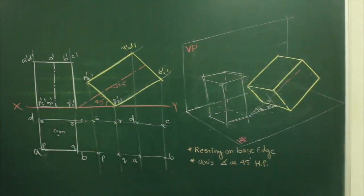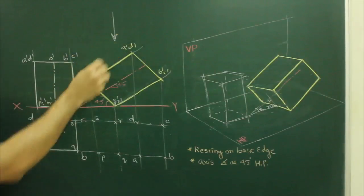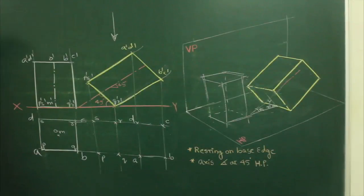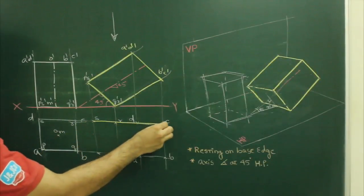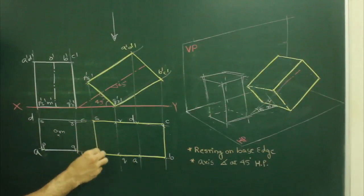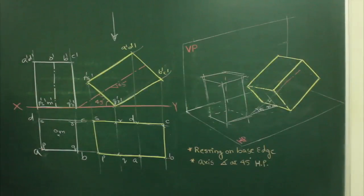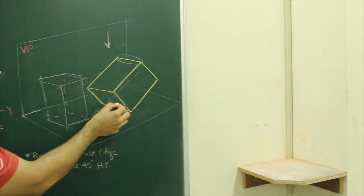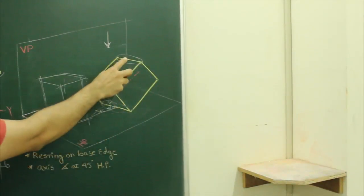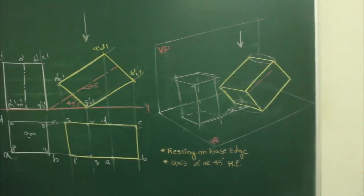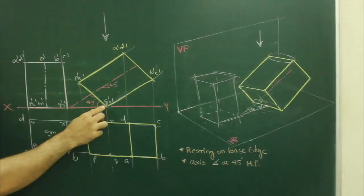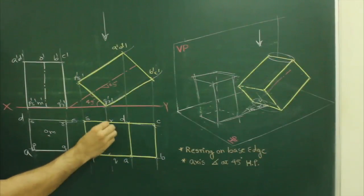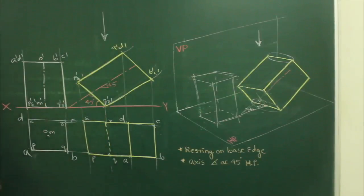Now we need to see visibility. When the observer sees from the top, the extreme edge would be visible, so all the outer length would be visible. The face a dash d dash is nearer to the observer, so ad would be visible. And q r is away from the observer, so that would be hidden.